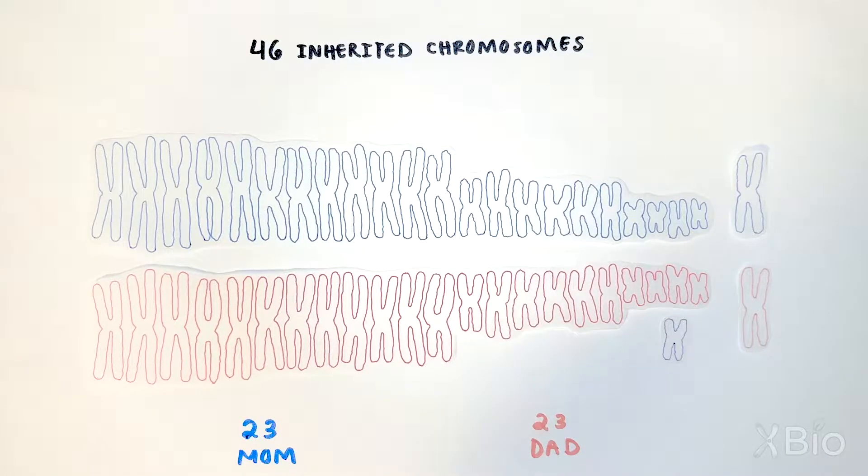One pair of chromosomes is unique and is involved in determining your sex. If you inherit an X chromosome from mom and an X from dad, you are a double X and acquire the characteristic traits of a female.